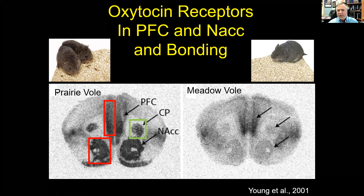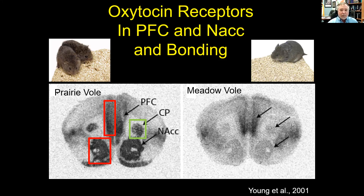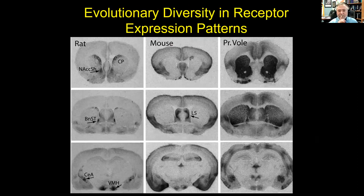Through these site-specific infusions of antagonists we began to work out the circuitry of pair bonding, and we're getting more sophisticated at this. The nucleus accumbens is part of the mesolimbic dopamine reward pathway — it's involved in addiction. We also know that dopamine is important for pair bonding. There are a lot of commonalities between pair bonding and addiction that I'll talk about later.